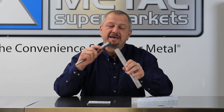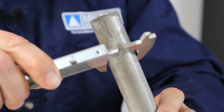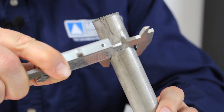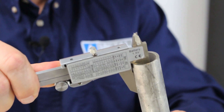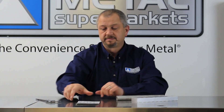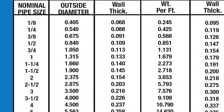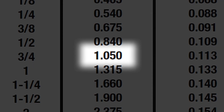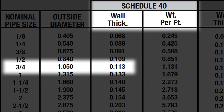Measuring pipe by the ID can get a little tricky, especially when the schedule increases. So what I like to do is measure the outside diameter — this is reading 1.050 — and then I measure the wall thickness, which is measuring 0.113. I then go to my pipe schedule chart, I find that outside diameter of 1.050, the wall thickness of 0.113, and that tells me that this is a three-quarter inch schedule 40 pipe.